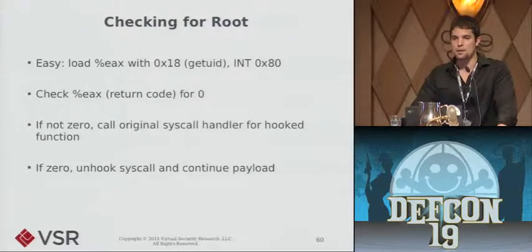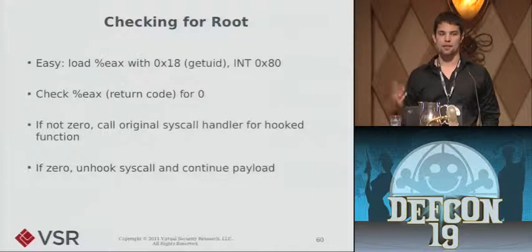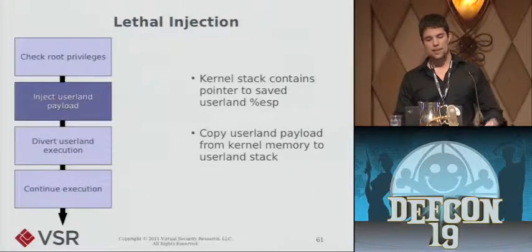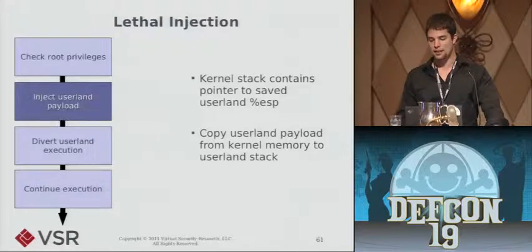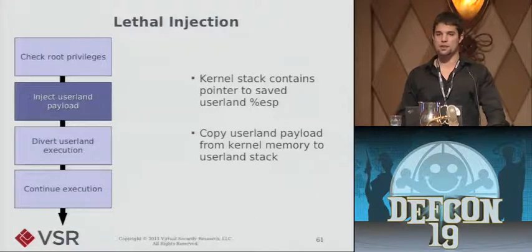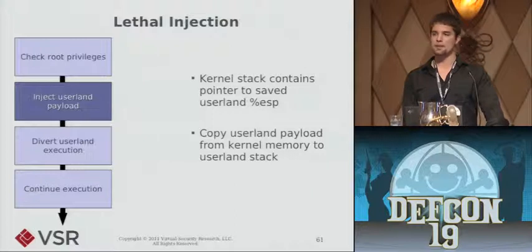Back to the actual challenge: we wanted to see if our process is owned by root. All you need to do is load the EAX register with the syscall number for getuid and call int 0x80. Then check the return code — if it's zero, we know our process is owned by root and we carry on. If it's not zero, we send that process along and have it call the original syscall handler we hooked so it just does whatever it was intending to do and keeps going. Next, we need to inject our user-land payload into this hijacked process. The kernel stack, as a result of the stack switch, actually has a pointer to the saved user-land stack pointer — when the process enters kernel mode the CPU pushes the user-land stack pointer onto the kernel stack. So we put our payload on the user-land stack since we can just read that pointer and know where it is.